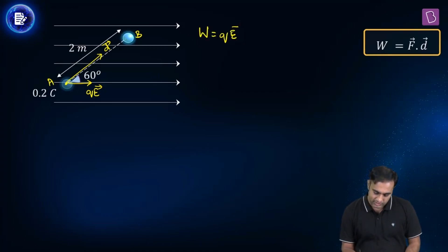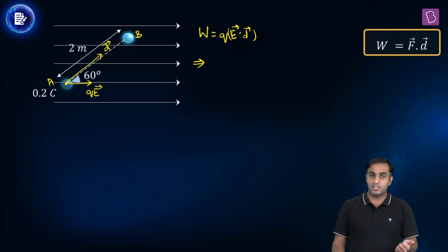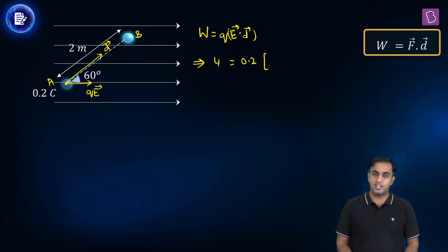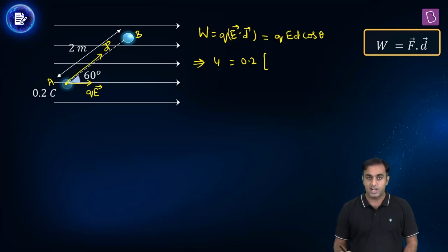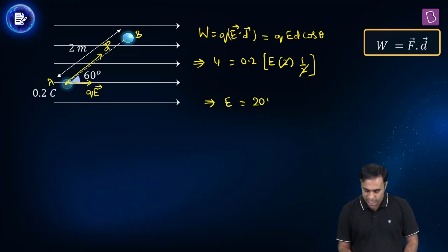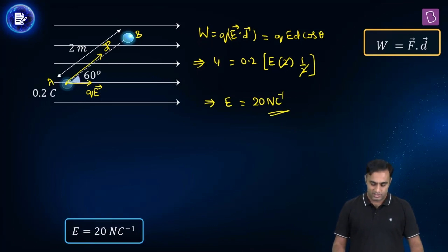We know the work done is 4 joules, the charge is 0.2 coulomb, the displacement d is 2 meters, and the angle theta is 60 degrees. Writing it out: 4 equals 0.2 times E times 2 times cos 60°, which is 0.2 times E times 2 times one half. Simplifying gives the electric field intensity E equal to 20 newtons per coulomb. The correct option is D.